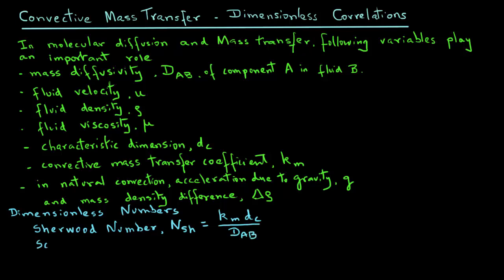The other dimensionless number that is important in mass transfer is a Schmidt number, and the symbol NSc, and that equals mu over rho times DAB.